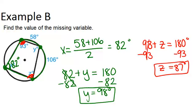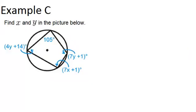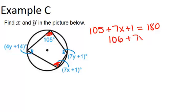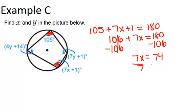Alright, let's look at example C. It says find x and y in the picture below. We again have an inscribed quadrilateral. So we have to remember, opposite angles will be supplementary and add up to 180 degrees. So the 105 degree angle and this angle 7x plus 1 must add up to 180 degrees. We can set up an equation: 105 plus 7x plus 1 equals 180 degrees. Then we just have to solve that for x. If we combine like terms, we get 106 plus 7x equals 180. Minus 106, 7x equals 74. So once we divide by 7, we get x is approximately 10.57.